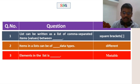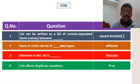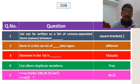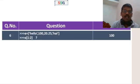Elements in the list are mutable, meaning data can be changed. A list allows duplicate members — the same element can appear more than once. For example: A = ['Hello', 1, 20.5]. Index starts from 0 and ends with n-1. A[1] gives 1, and A[1][1] gives 1.